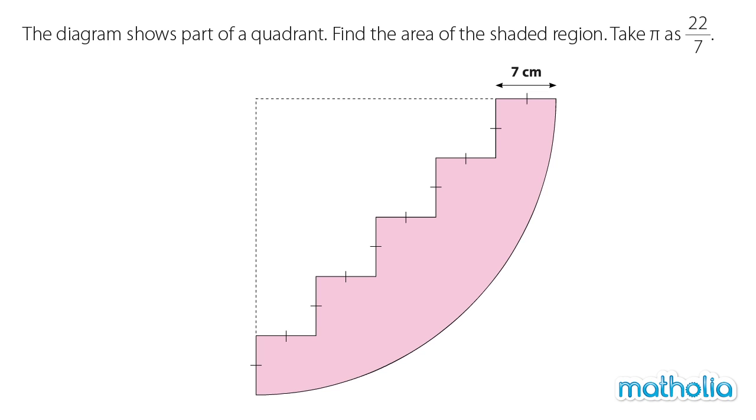The diagram shows part of a quadrant. Find the area of the shaded region. Take pi as 22 over 7.